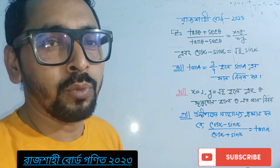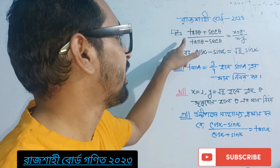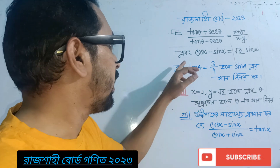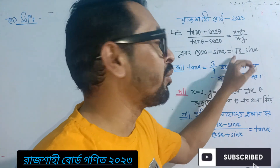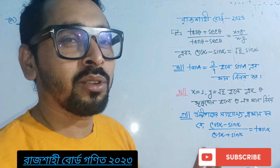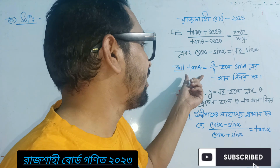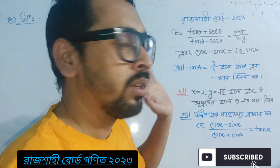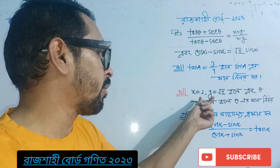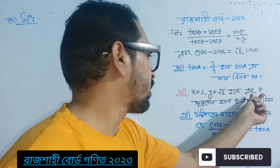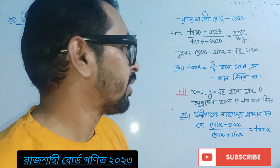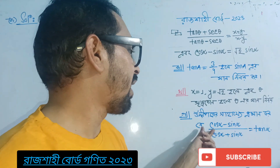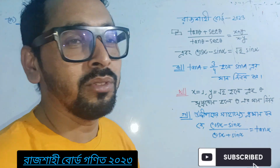What we have to do is the same thing: tan theta plus sec theta divided by tan theta minus sec theta, and cos alpha minus sin alpha equal to root 2 sin alpha. The question is: tan a is equal to 3 by 4. And cos alpha minus sin alpha divided by cos alpha plus sin alpha is equal to tan alpha.